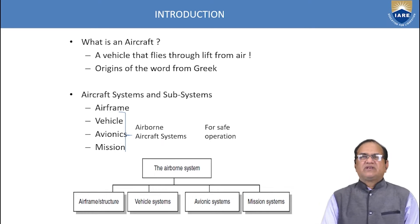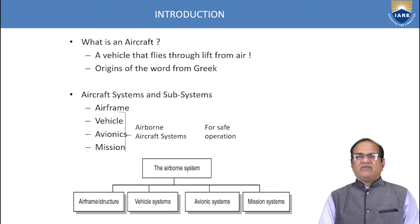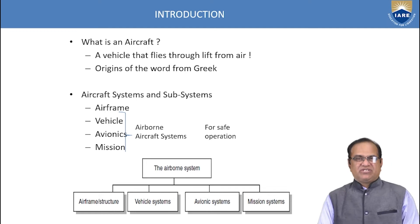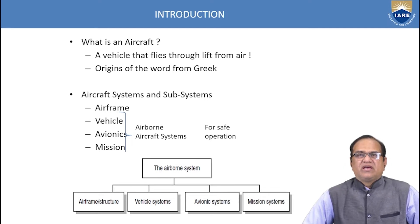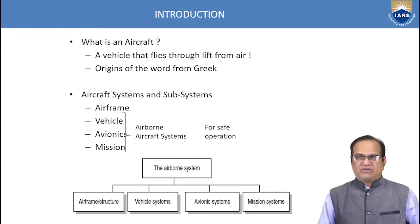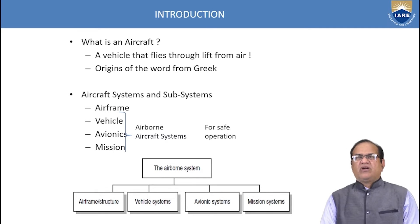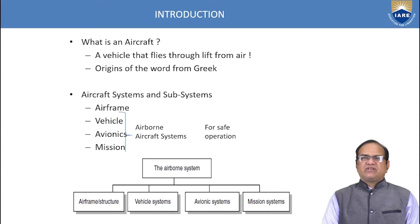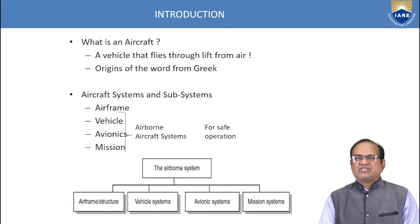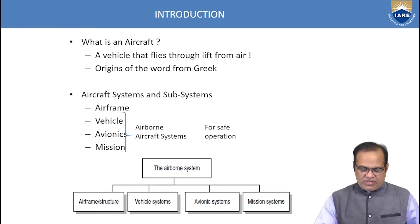When we talk about aircraft systems and subsystems, we have the airframe, vehicle, avionics, and mission systems. Other than the airframe, vehicle avionics and mission systems are part of the airborne aircraft systems and are for the safe operation of the aircraft. We can divide airborne systems into four components: airframe structure system, vehicle system, avionic system, and mission system.